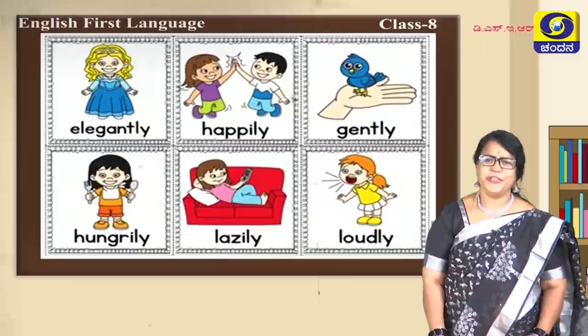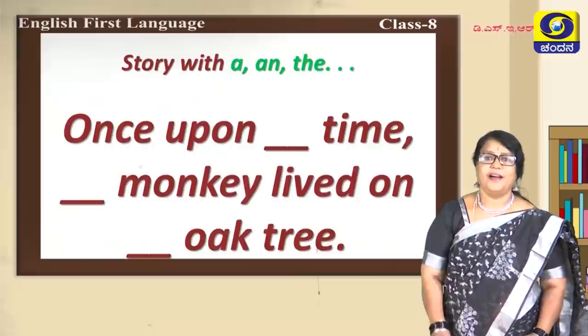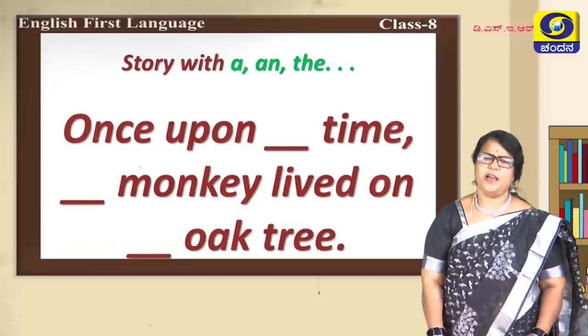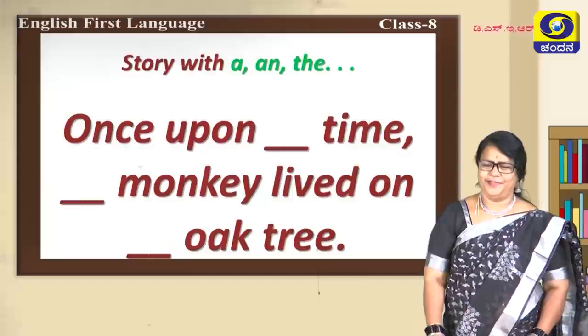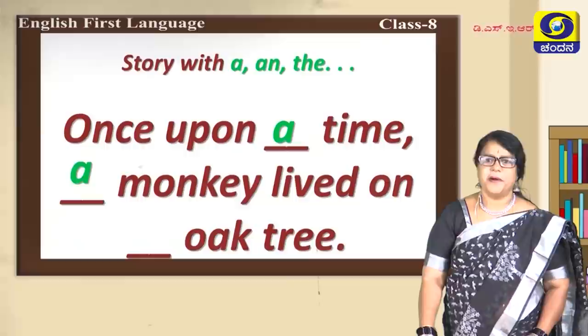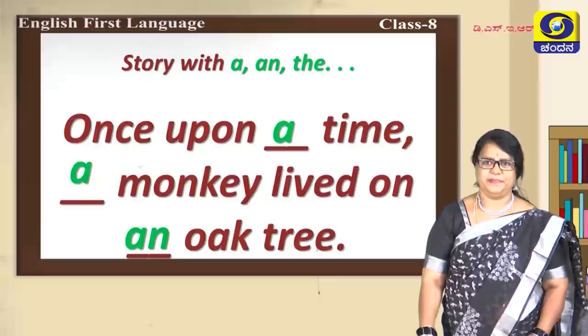Let's go to another story. This is a little different. As you are reading the story, you need to make a note of the words that pop in — they are very small words with 'a' and 'the'. Look into the story: Once upon a time, a monkey lived on an oak tree.